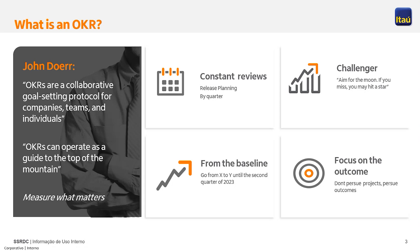The third characteristic: in OKRs we always come from the baseline. Every key result is written as 'go from X to Y,' so we always look back at X — what we already did — and forward to Y — where we want to get. Everyone who looks at the OKRs knows where the company is coming from and where it's going. We never lose sight of where we came from.